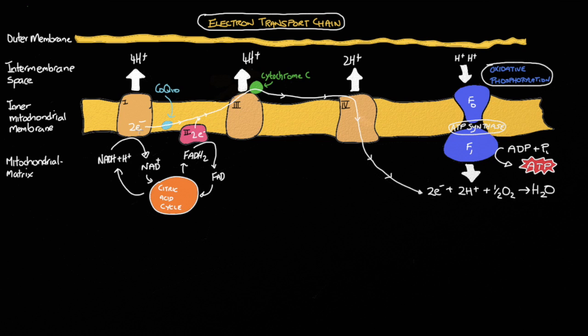This movement of electrons via these complexes creates an electric current, and it's this electric current that fuels complex I, III and IV to pump protons from the mitochondrial matrix into the intermembrane space. This in turn creates an electrochemical gradient where we have a high positive charge within the intermembrane space and relatively low positive charge within the mitochondrial matrix.